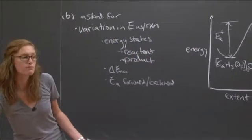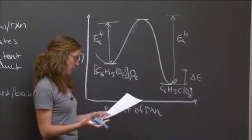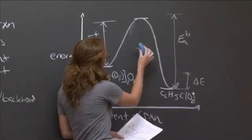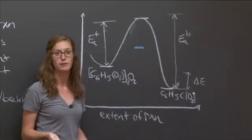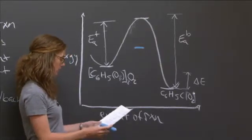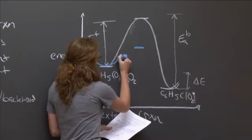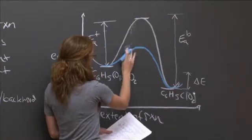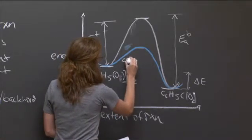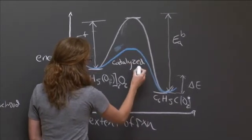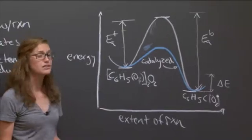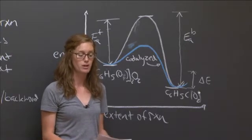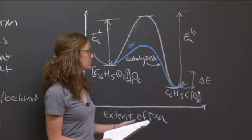And so the way we can change this is that instead of having our activation barrier up there, we can say it's going to be somewhere here. It's going to be lower by the presence of the catalyst. So we want to make a smooth curve again, and connect to this lower activation barrier. And you'd want to label this. This is the catalyzed curve there. And as long as you showed that the activation barrier was lowered by the presence of a catalyst, that's fine. That was what the question was asking for. So we've labeled everything, answered all the questions, and we're done with this problem.